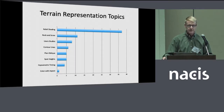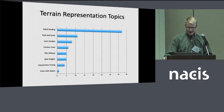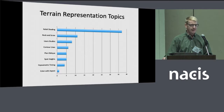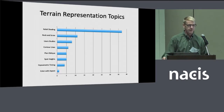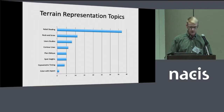This first graph shows the general topics covered by each article. Some of this might reflect the interests of the people involved in the study. A lot of people doing relief shading are part of this study. We were also trying to stay away, at least in the first run, from very specialized techniques like illuminated contours or hachuring. But really, relief shading was the number one thing we were seeing in these articles.